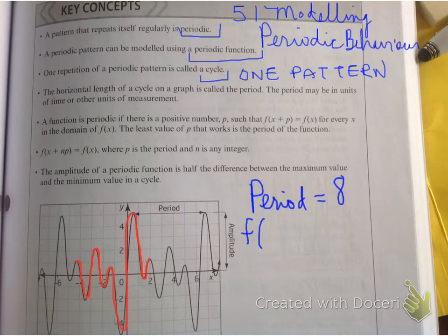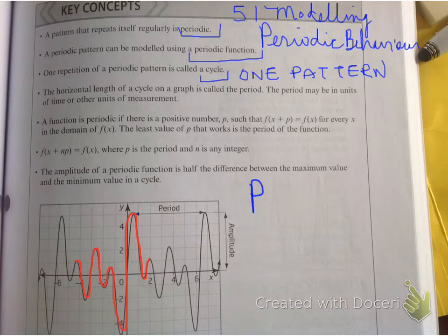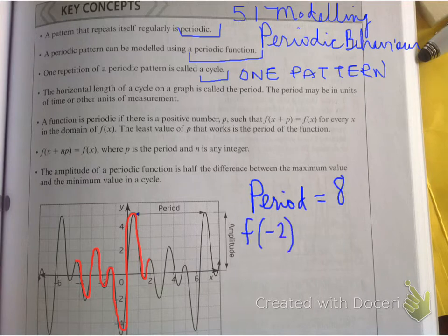Now, the period of this particular function is approximately, let's say, oh, this is an example. Actually, not for this example, but I'm going to give you just a random example. Let's say I gave you a random example that said the period of something is equal to eight.